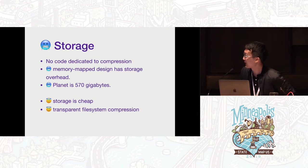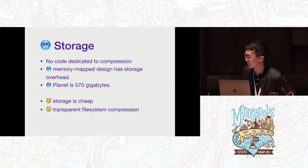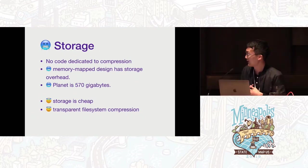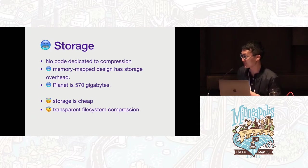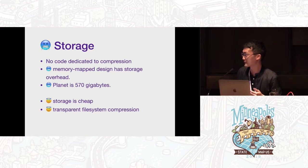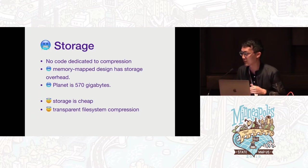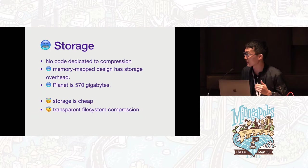There are some drawbacks. The biggest is storage space — there's no compression code because of that design, and there's storage overhead from Cap'n Proto since all fields need addresses divisible by eight. So the planet ends up being more than half a terabyte. But storage is cheap, and you can also use this on a transparently compressed filesystem. In recent years, ZFS and Btrfs have become more popular and widely deployed on managed services, and it works well with those filesystems. Planet becomes about 200 gigabytes on ZFS.